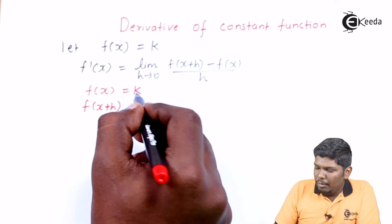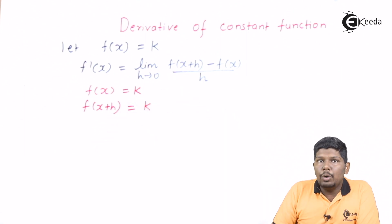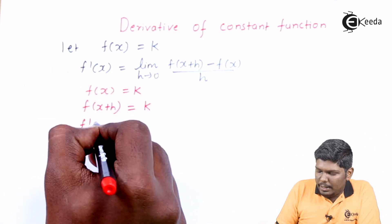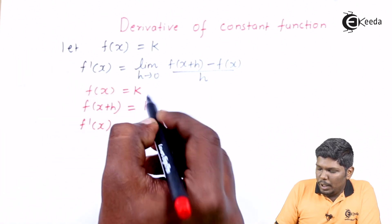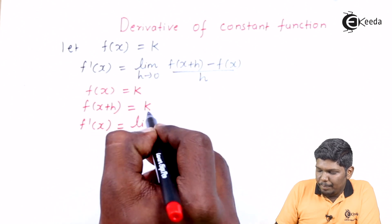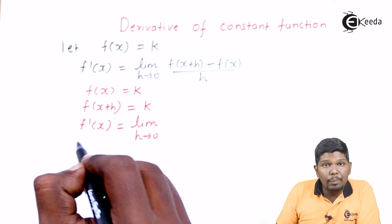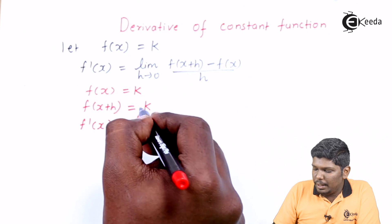Let us substitute these two values in the formula. So f dash x equals limit h tending to 0, f of x plus h we have k minus again f of x we have k upon h.